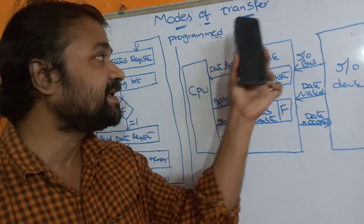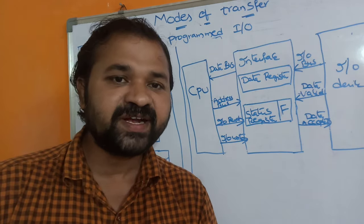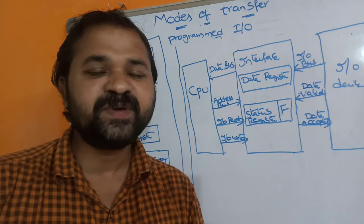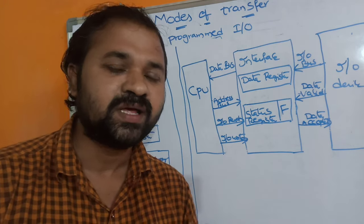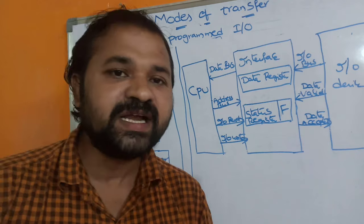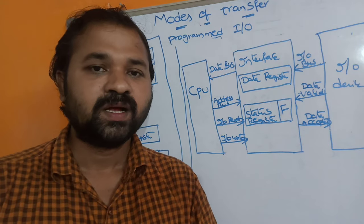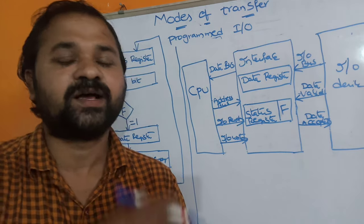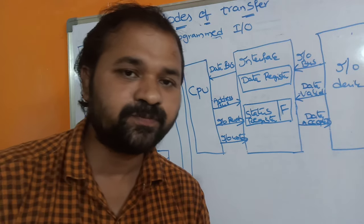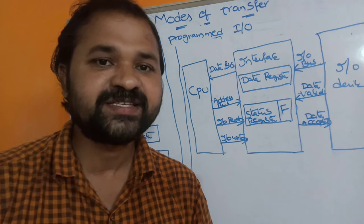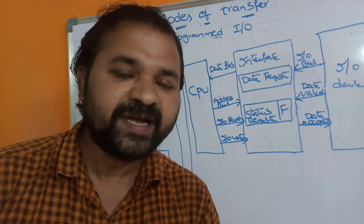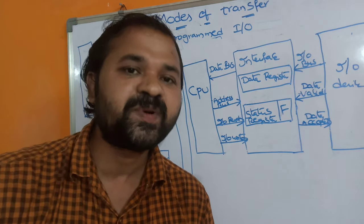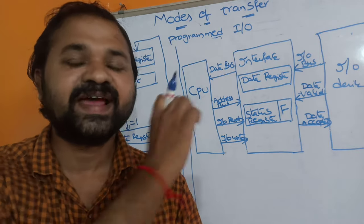Programmed IO is mainly useful in order to transfer data between IO devices and memory. IO devices means we can have either input devices or output devices. The most commonly used input device is keyboard. The contents of the keyboard will be placed in memory with the help of the CPU. If you consider an output device like a monitor, then the contents of the memory will be displayed on the monitor with the help of the CPU.